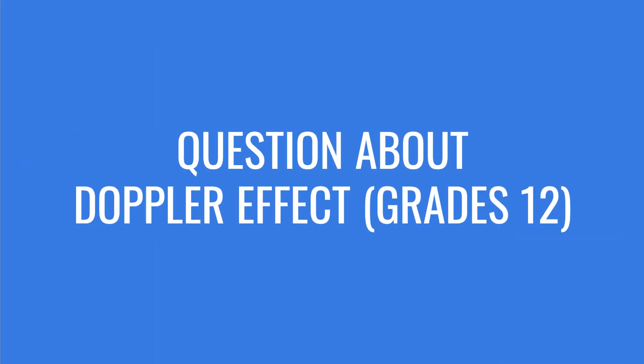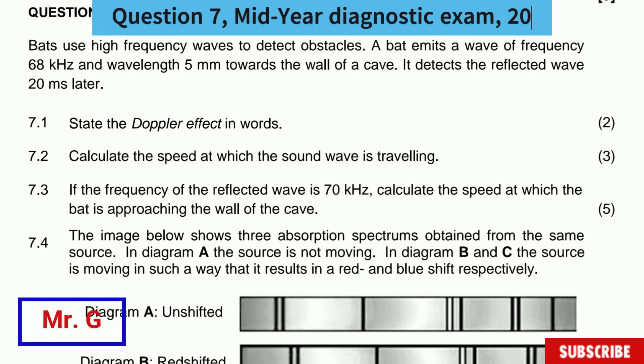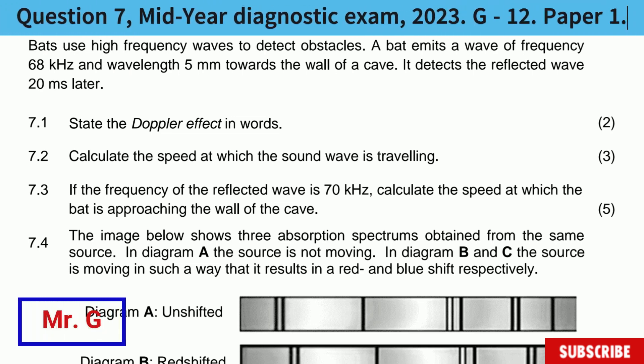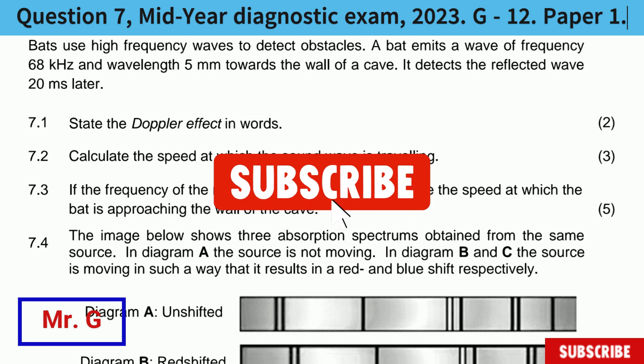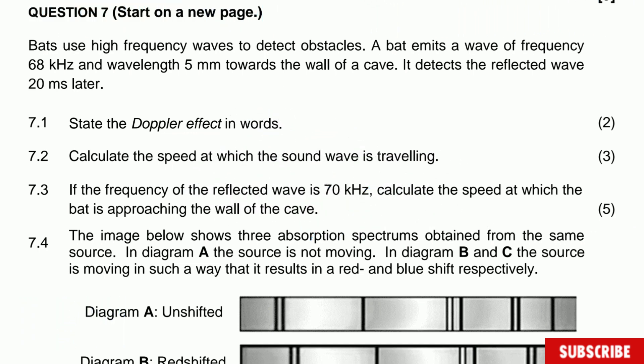Hello guys, here Mr. G with another video for the Crate 12. This one is question 7 from the MedGIA diagnostic exam developed by Professor Rodriguez, and this one is about the Doppler effect. The question says bats use high frequency waves to detect obstacles. A bat emits a wave of frequency 68 kilohertz and wavelength 5 millimeters towards the wall of a cave. It detects the reflected wave 20 milliseconds later.